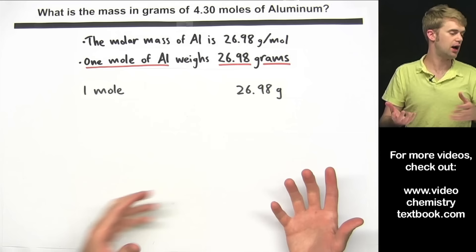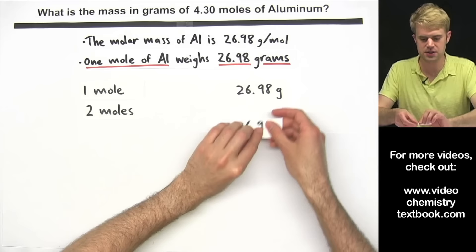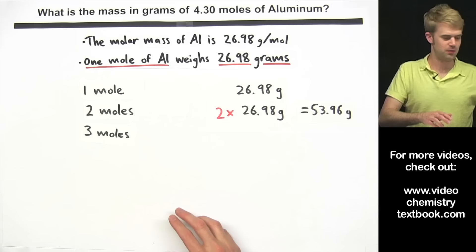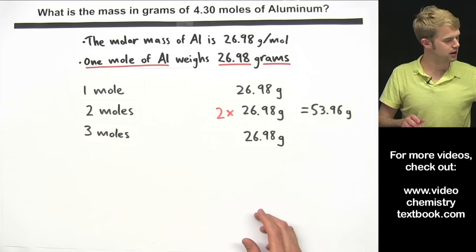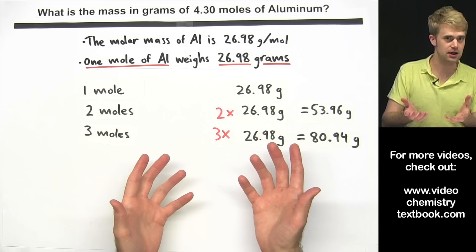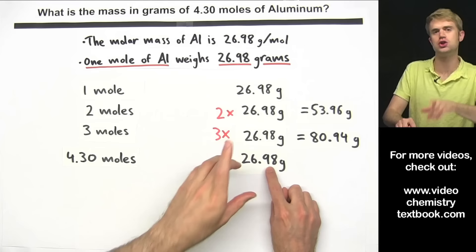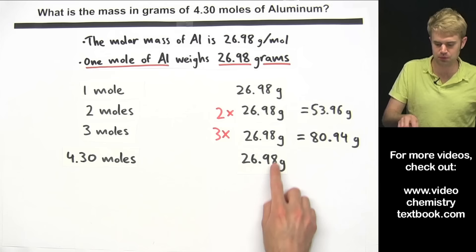How much would two moles of aluminum weigh? We take 26.98, which is how much one mole weighs, and multiply it by two. How much would three moles weigh? We take 26.98 and multiply it by three. In this problem we're talking about 4.30 moles, and we know that 26.98 is how much one mole weighs. So let's take that number and multiply it by 4.30.